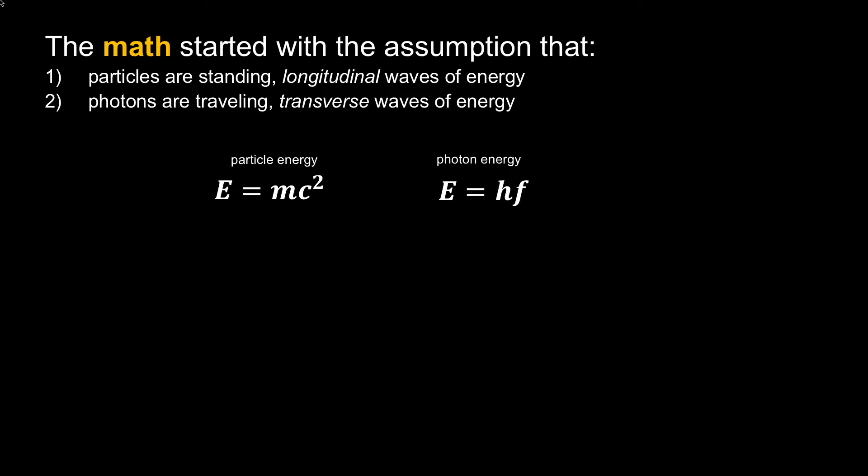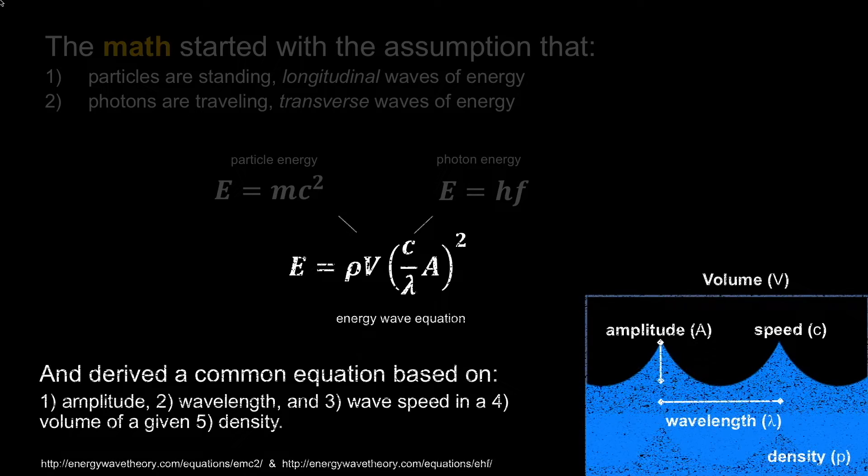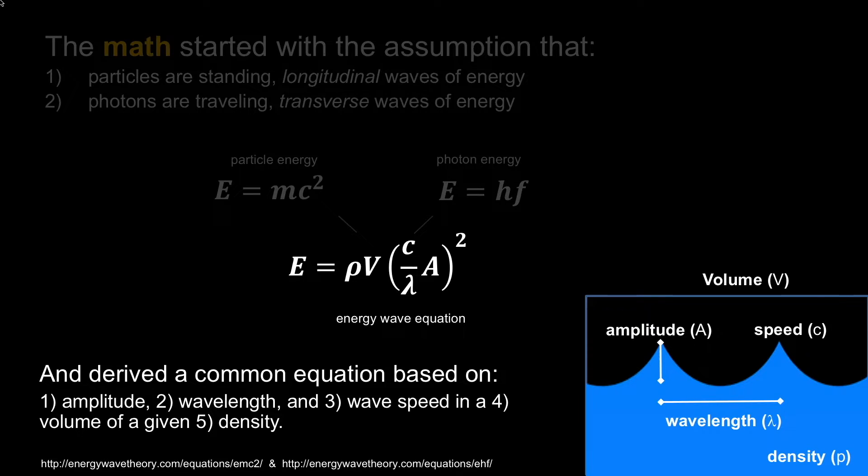The math around the theory started with the assumption that particles are standing longitudinal waves of energy from Wolff's and Lafreniere's work, and that photons are traveling transverse waves. These are two very different types of energies, but it was brought together in one. The former two equations were derived from an energy wave equation.